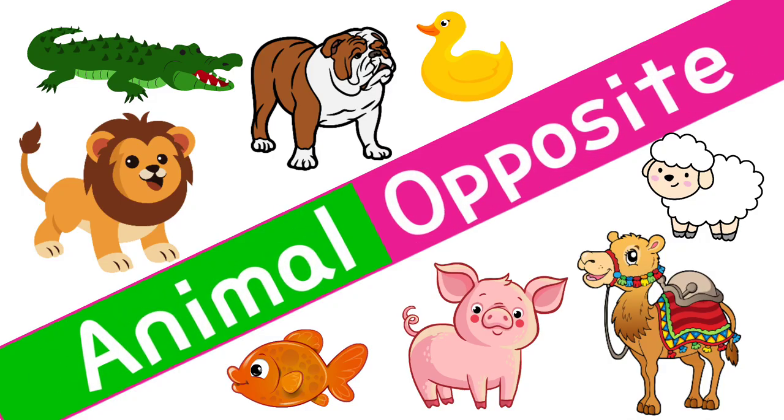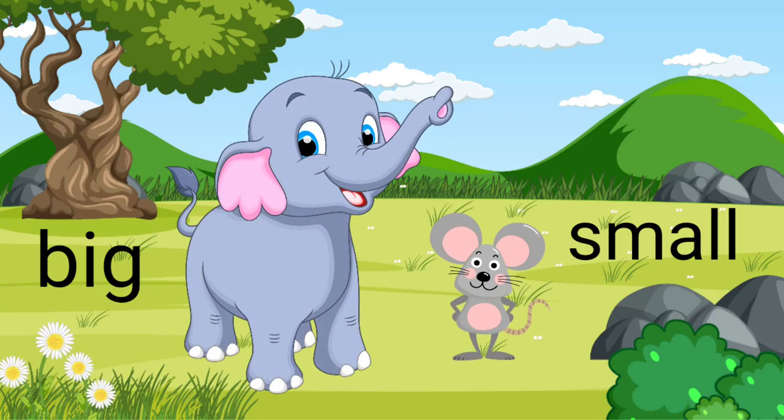Now let's have animal opposites. Big elephant. Small mouse.